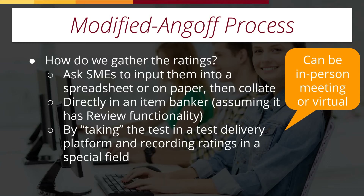How do we actually gather these ratings? Usually what you're going to do is ask the SMEs to input them into a spreadsheet or on paper and then collate it — this is the traditional method. Before the days of the internet, they would show items up on a projector screen in the middle of the room and all the raters would write their ratings down on paper, then you'd collate it and enter it into a spreadsheet. But nowadays with the internet, you can do this work directly in an item banker. Item bankers that are sufficiently powerful will have review functionality where SMEs can log in from anywhere, see the items in a test form or pool, and leave their Angoff rating there. You can also do it by having them take the test in a test delivery platform and recording their ratings in a special field — for example, in a comments field.